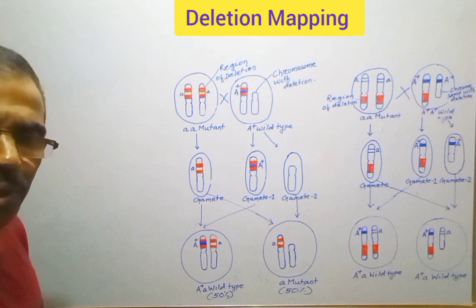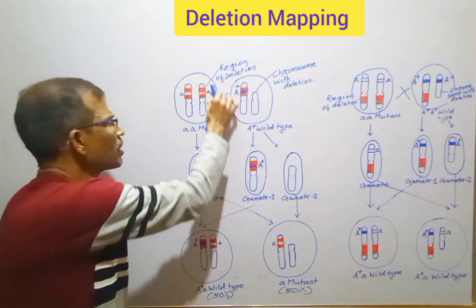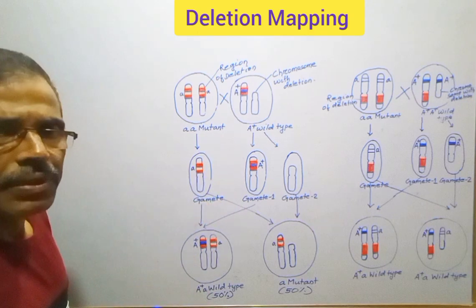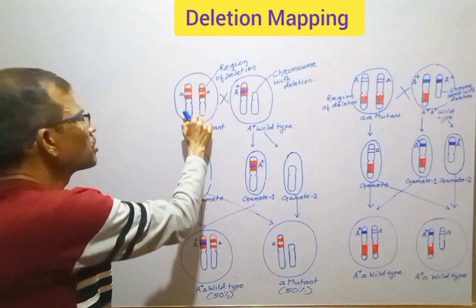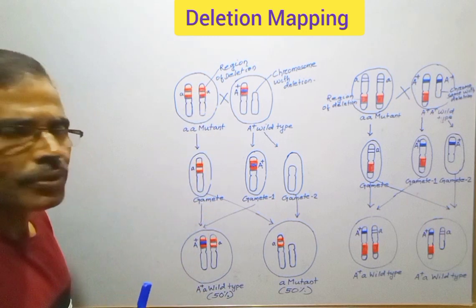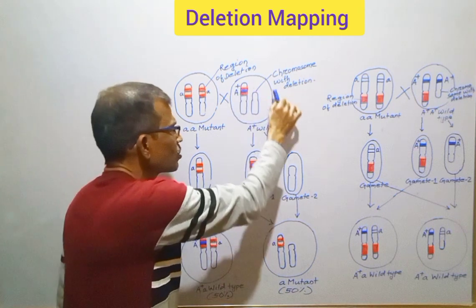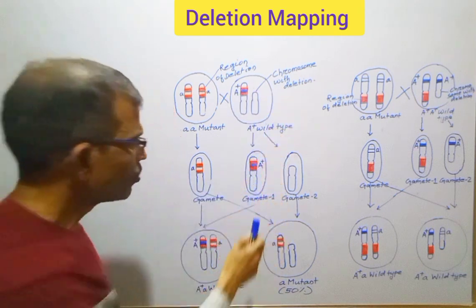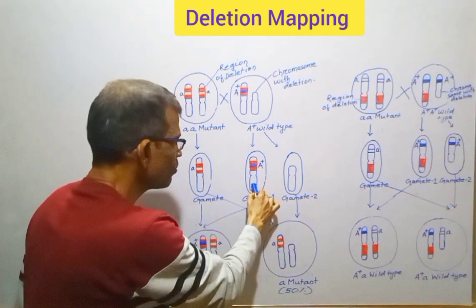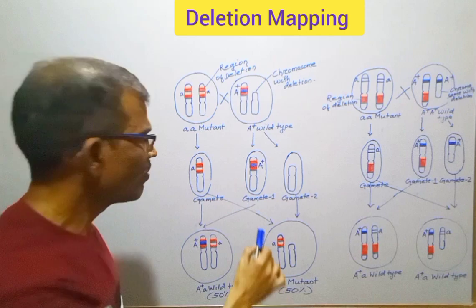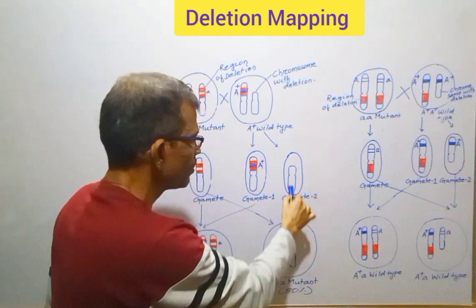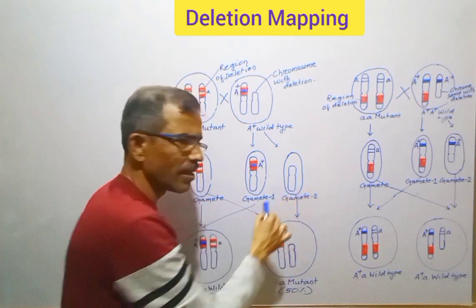At the time of gametogenesis, the homozygous individual will form only one type of gamete. This is because both the chromosomes of the homologous pair have the mutated allele. But the heterozygous parent will form two types of gametes. In one type of gamete, the chromosome is normal having a wild-type allele, but in the remaining gamete, the chromosome has the deletion.